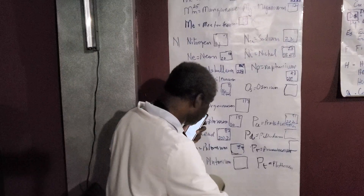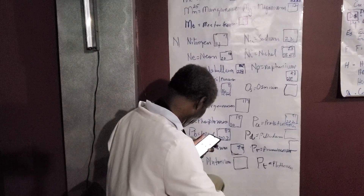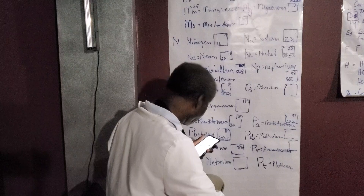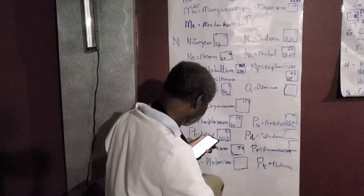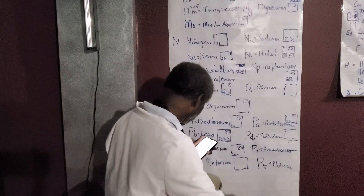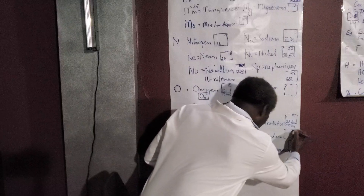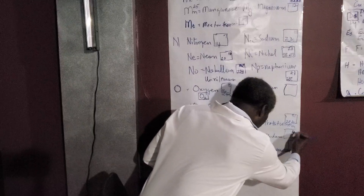Palladium — atomic number 46. According to PubChem, palladium is a chemical element with symbol PD and atomic number 46.